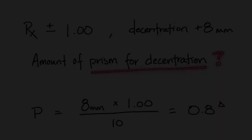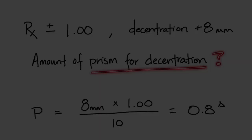And there you have it. Now you can determine the prism for decentration needed to decenter the OC on the lens blank. I hope this video was helpful. Thanks for watching.